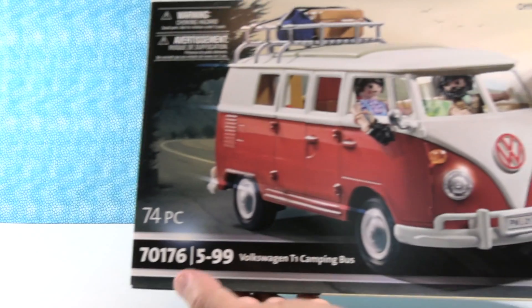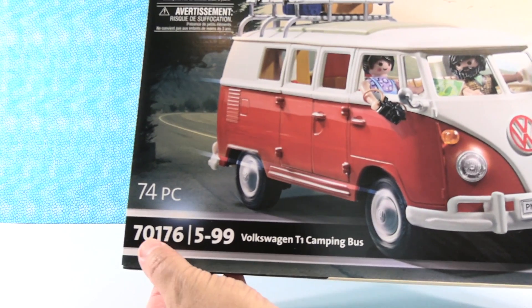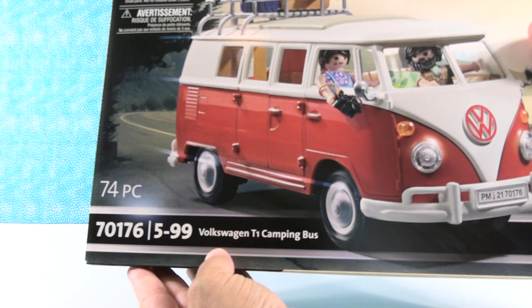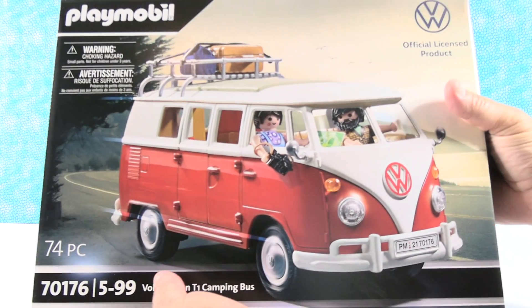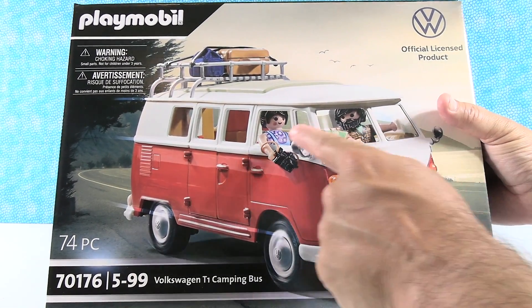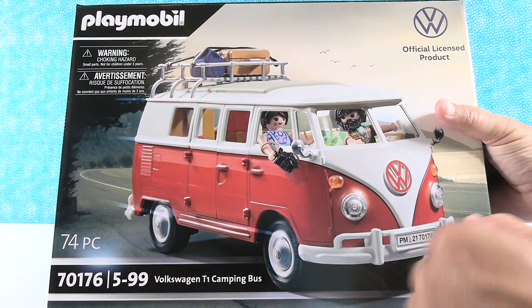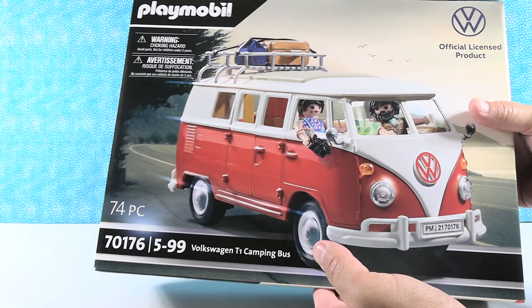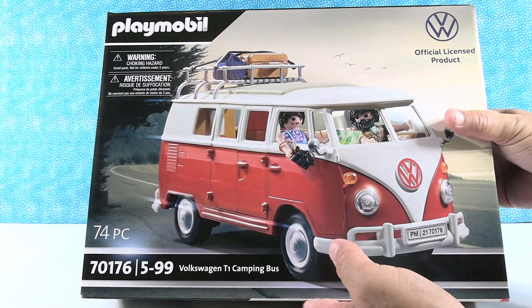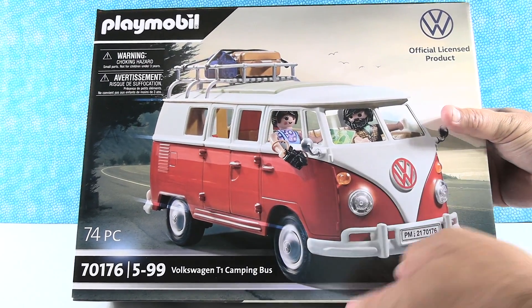I have set 70176, the Volkswagen T1 camping bus. This is another classic vehicle. I love the figures here. They've got the map, they've got a camera. They're probably arguing about directions. She has the map and he's like, where do I go? I love the classic V front on here.